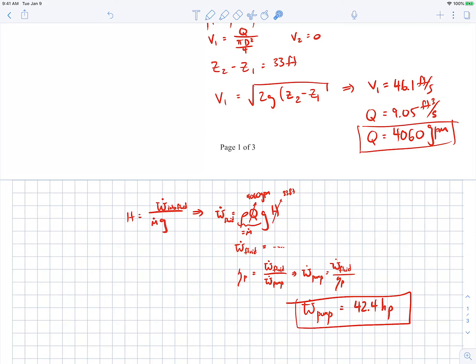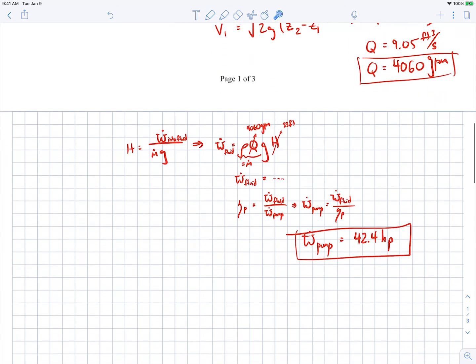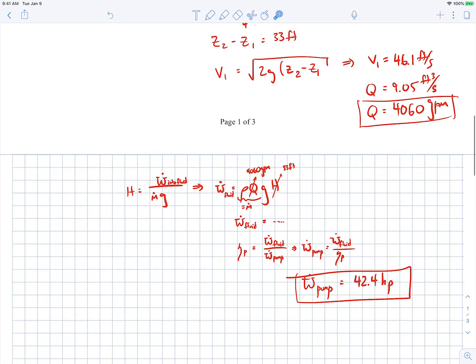We rearrange this equation to solve for the power in the fluid. We know the density of water, we know the flow rate we're dealing with, we know the acceleration due to gravity, we know the head rise was 33 feet. We can solve for the power into the fluid, but that's not the power into the pump. We know the efficiency of the pump is how much power gets into the fluid versus how much power we put into the pump. When you plug in all the numbers and do the unit conversions, it comes out to be just over 42 horsepower into the pump.